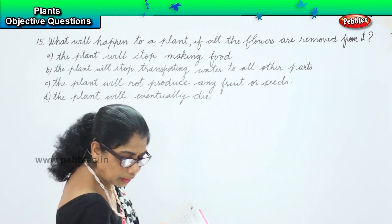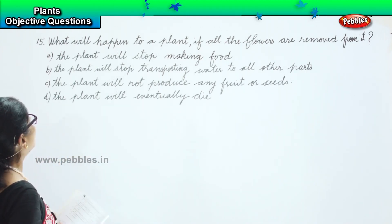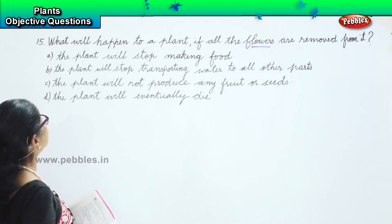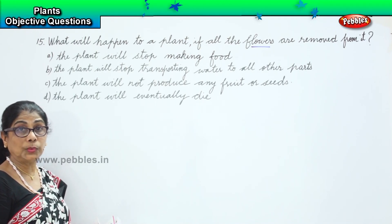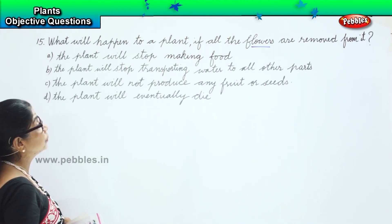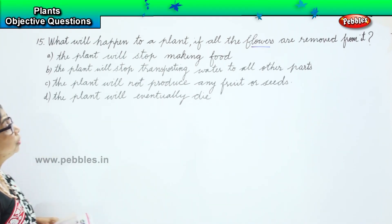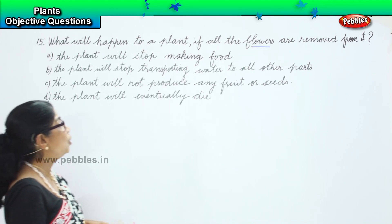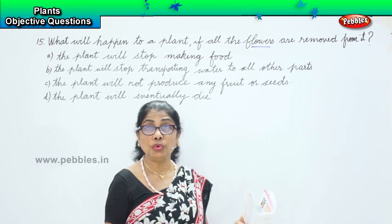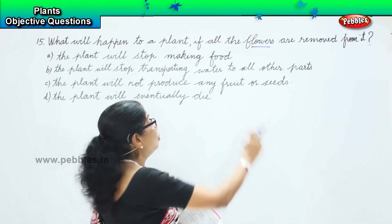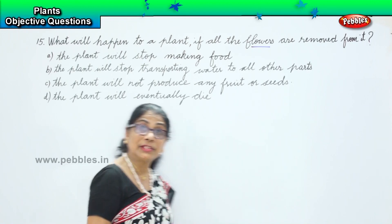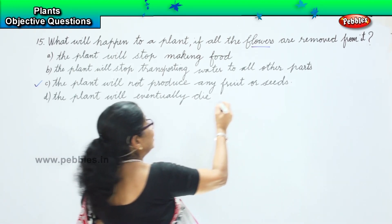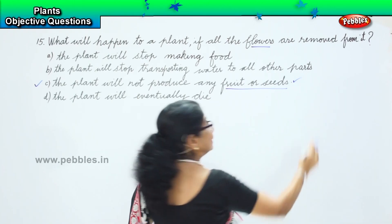Now let's look at all four options. The question is: what will happen to a plant if all the flowers are removed from it? Option A — the plant will stop making food — no, that's the work of the leaves. Option B — the plant will stop transporting water to all other parts — that is also not the flowers; it's the work of the root and stem. Option C — the plant will not produce any fruit or seed. We are talking about the flowers. If flowers are removed, no fruit, no seed. So option C is the correct one. Because if you remove the flowers, it will not produce fruit and will not have any seeds.